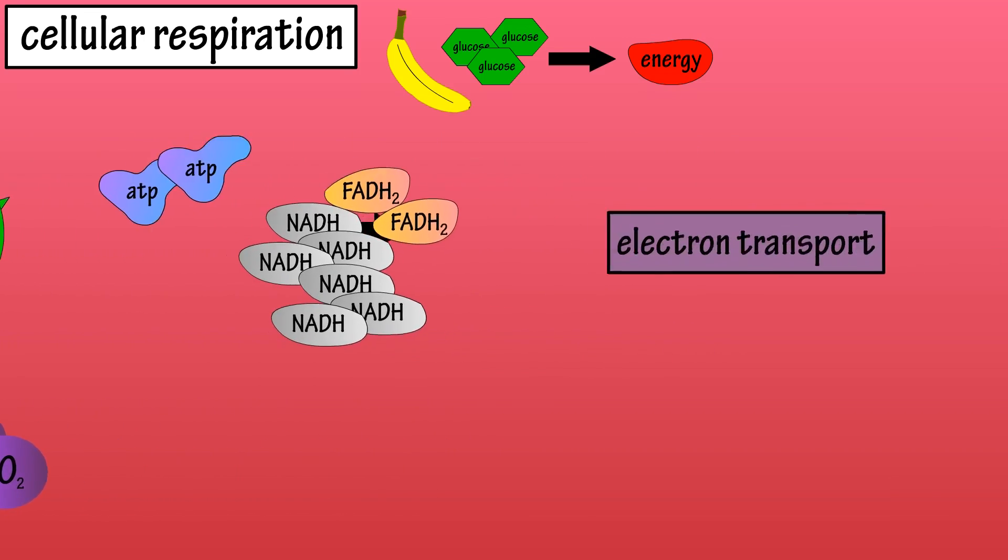Now for the fourth stage, the electron transport chain. This is where the most ATP production occurs. Here, NADH and FADH2 release electrons which after a series of steps leads to the production of 32 to 34 ATP molecules.